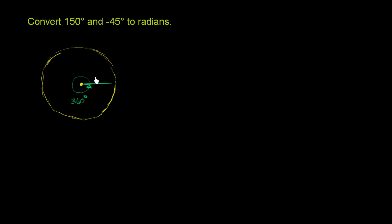If we did the same thing, how many radians is that if we were to go all the way around the circle? Well, we just have to remember: when we're measuring in terms of radians, we're really talking about the arc that subtends that angle. If you go all the way around, you're talking about the arc length of the entire circle — essentially the circumference — and how many radii that is. The circumference of a circle is 2π times the radius.